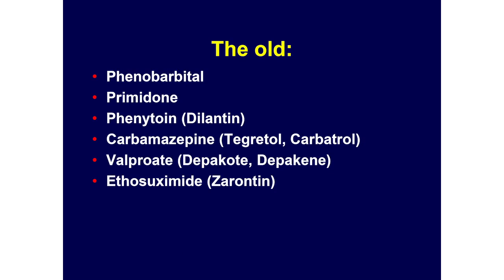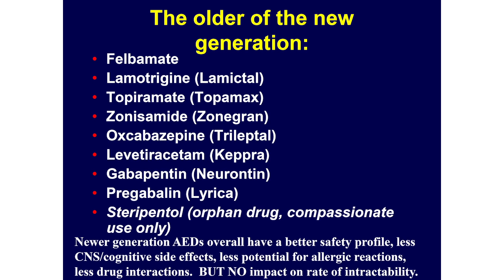These are the old tried-and-true medications we still use not infrequently — in the older days, this was all that was available. Then there are the newer generation medications, with more options. The first name is the generic name; in parentheses are the brand names. The newer medications overall have a better safety profile, less cognitive side effects, and less potential allergic reactions, but they haven't unfortunately changed the rate of refractory intractability of epilepsy despite having more options.